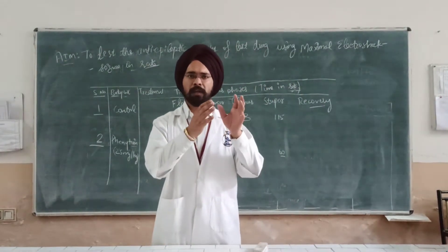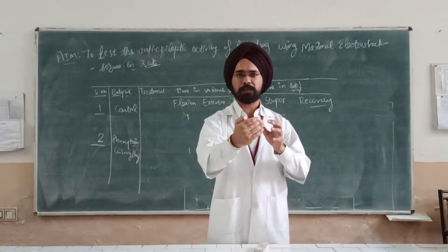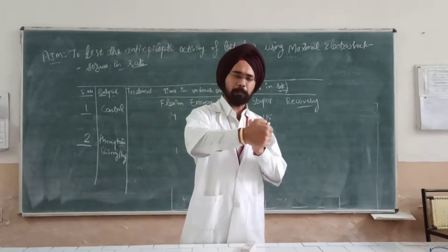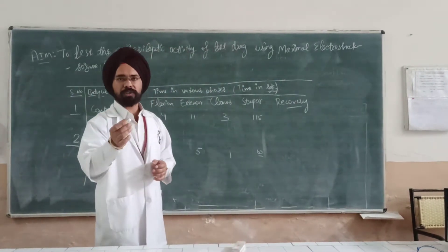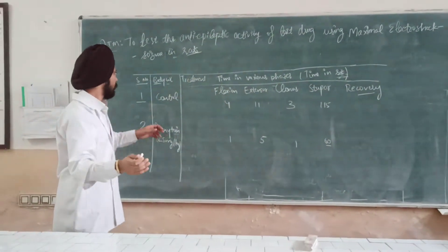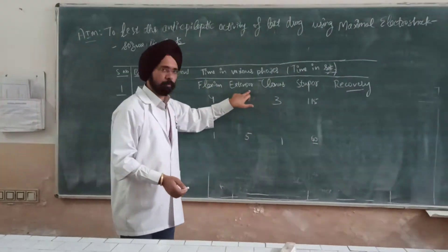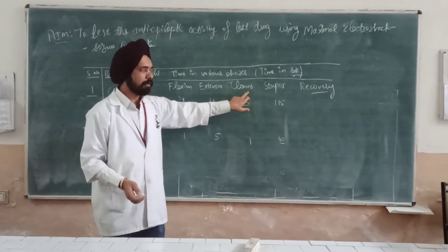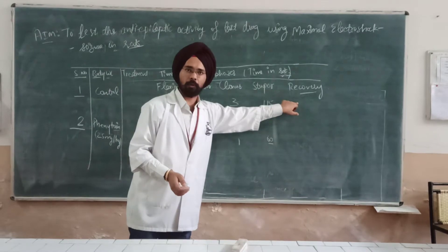Generalized seizures are called generalized because in this type of seizure there are stages which occur in a step-by-step manner. A typical example of generalized seizures includes flexor, then extensor movement, then clonus movement, then followed by stupor, and then recovery.